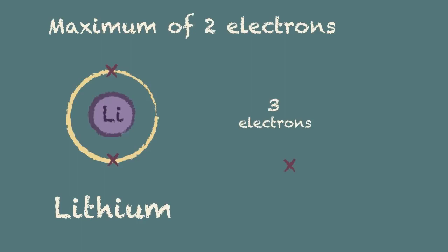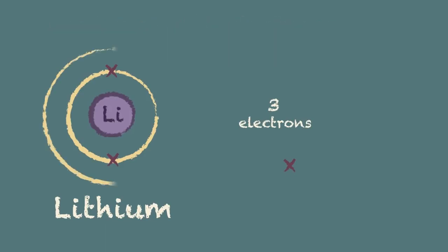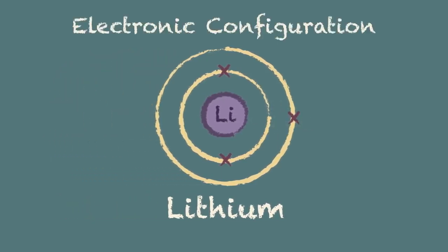The third electron therefore must go into the next shell which we draw as a larger circle around the outside of the first. And that completes the electronic configuration of a lithium atom.